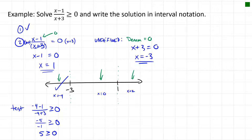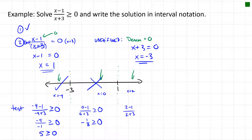Testing x = 0 in the middle: (0 − 1)/(0 + 3) = −1/3, and −1/3 ≥ 0 is false, so the middle region is not part of the solution. Testing x = 2: (2 − 1)/(2 + 3) = 1/5, which is positive and ≥ 0, so the region to the right of 1 is true.